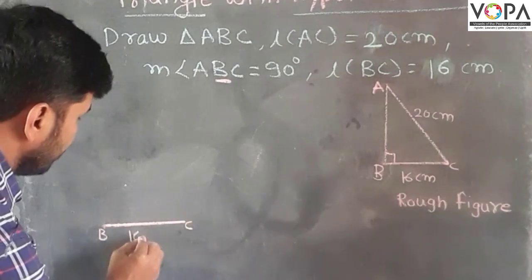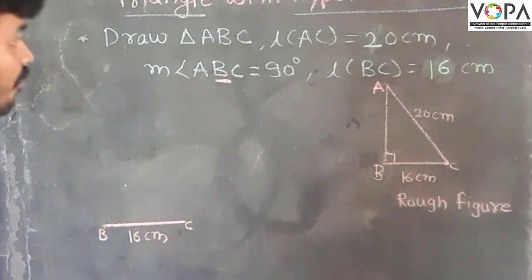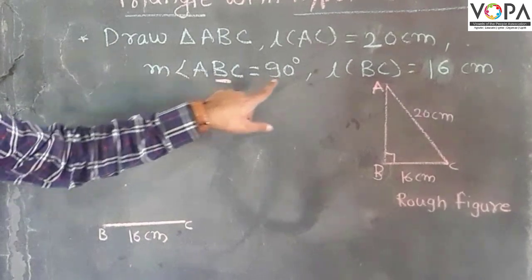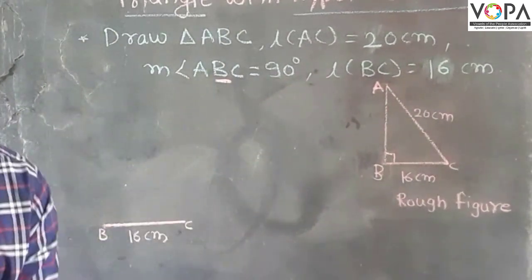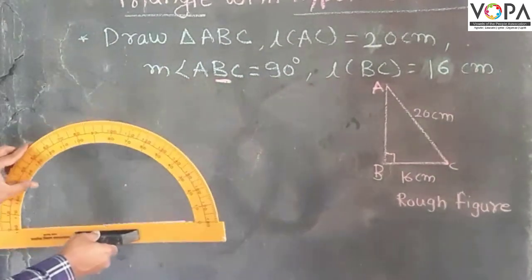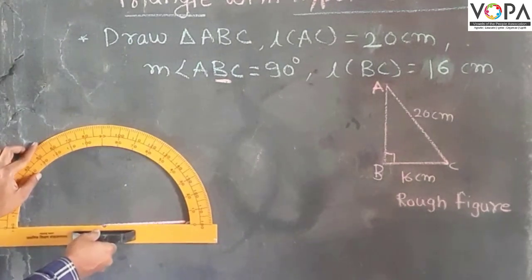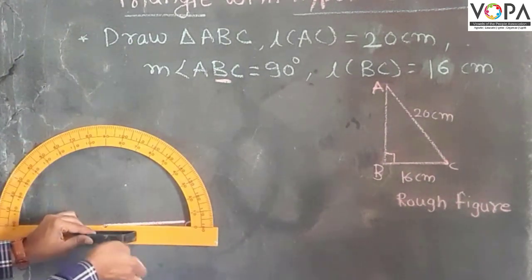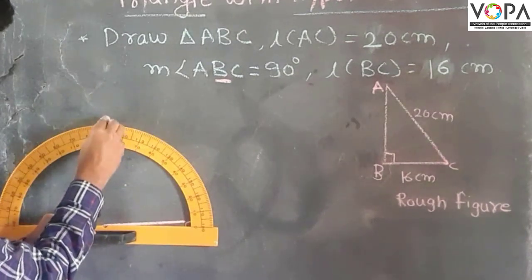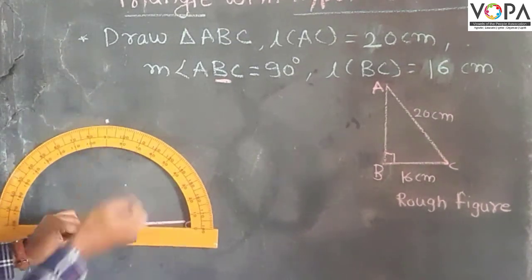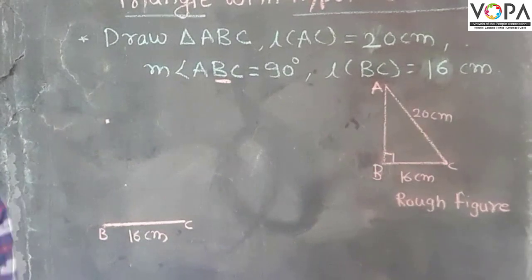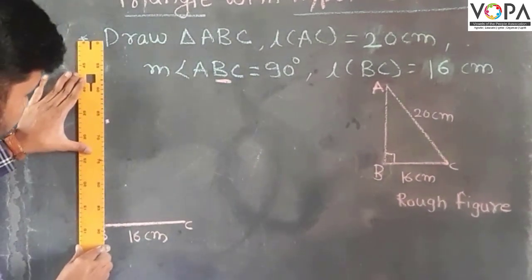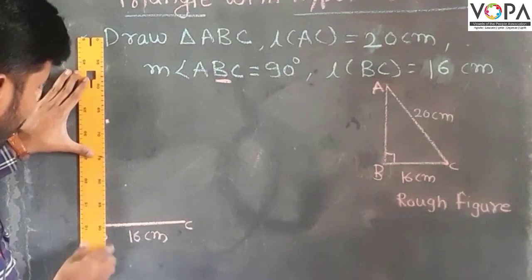Now angle B is 90 degrees, so take protractor. Put down the protractor on the vertex B and point that 90 degrees. Join that point and vertex B with the help of ruler. This is the 90 degree angle of B.